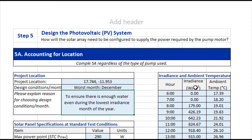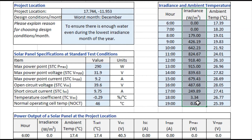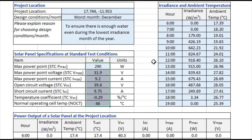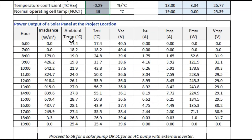We also have irradiance and ambient temperature data for each hour of the day from 6am until 7pm. We would then enter the panel specifications — either from the sticker on the back of the solar panel or from the manufacturer's website at standard test conditions. Once you've entered that, the spreadsheet automatically calculates the power output of a single solar panel at this project location.